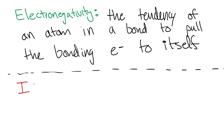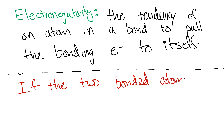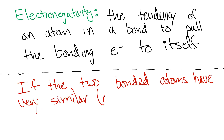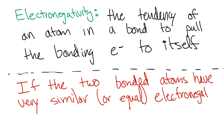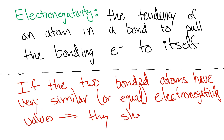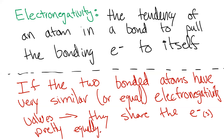If two bonded atoms have very similar or equal electronegativity values, they share the electrons pretty equally. If you calculate the difference in electronegativity between the two atoms and it literally is zero, that means they are shared equally — the electrons are sitting pretty much in the center between the two atoms.